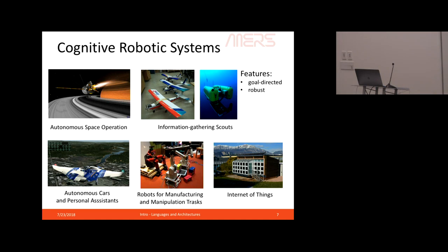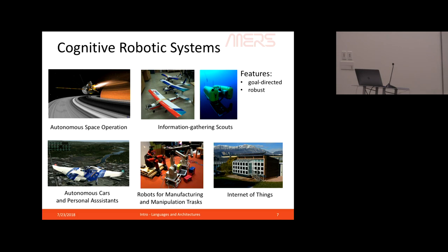The first ability we want is goal-directed programming. Rather than programming in C or Python, we want to articulate the goals we want to achieve and how the system acts on those goals. First, we want to articulate at a high level what we want the system to do. Second, being goal-directed gives the system more flexibility to adapt, because if it knows its goals and has a decision-making capability, it can think about other courses of action to meet those goals, and it can also detect when achieving those goals is impossible.